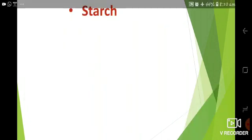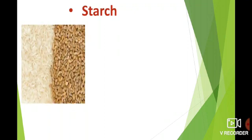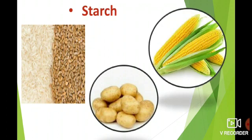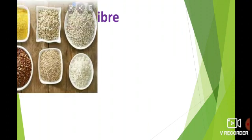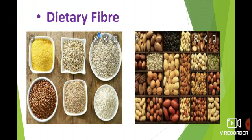Second: starch. Starch is also a form of carbohydrate and its sources are rice, wheat, potato, and maize. Third: dietary fiber. Dietary fiber is also a form of carbohydrate and its sources are nuts and whole grains.